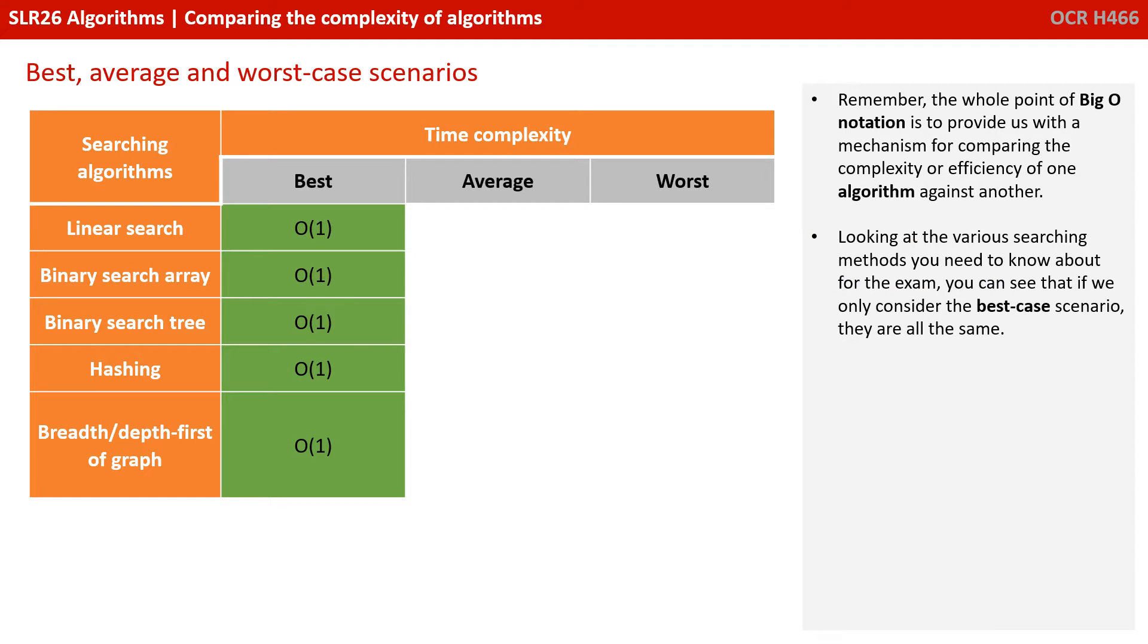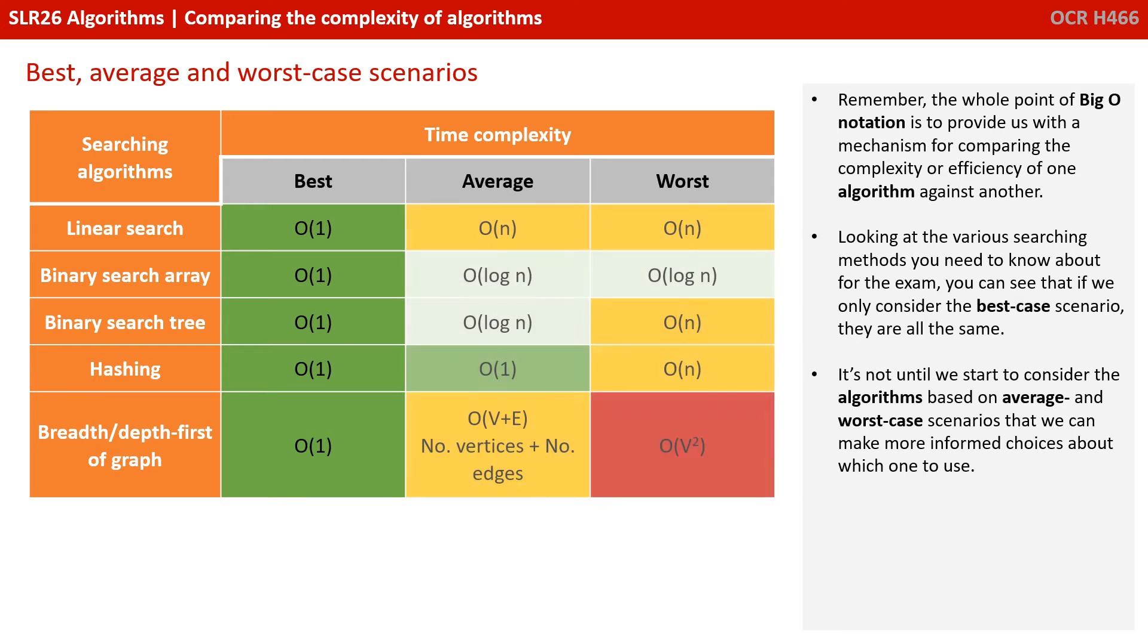Remember that the whole point of big O notation is to provide us with a mechanism for comparing the complexity or efficiency of one algorithm against another. Looking at the various searching methods you need to know about for the exam, you can see that if we only ever considered the best case scenario, they all have the same constant time complexity. It's not until we start to consider the algorithms based on their average and worst case scenarios that we can make more informed choices about which one to use for any given situation.